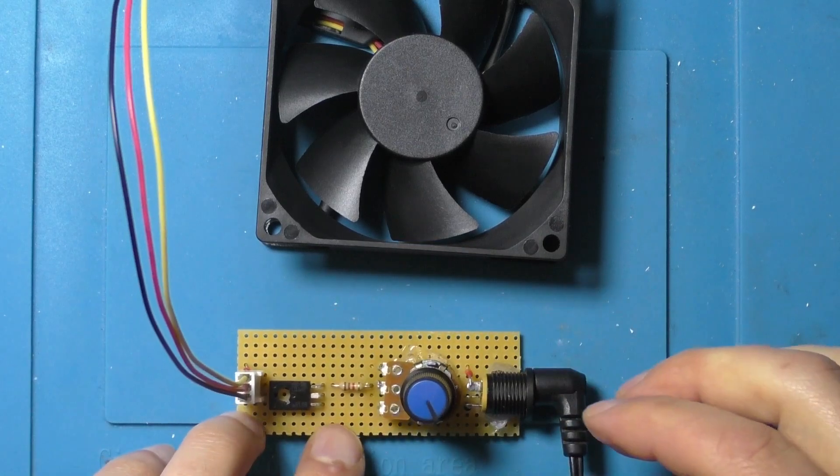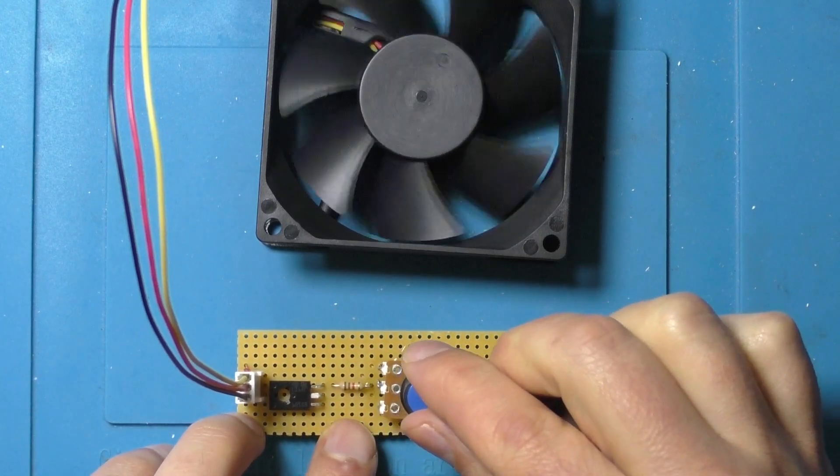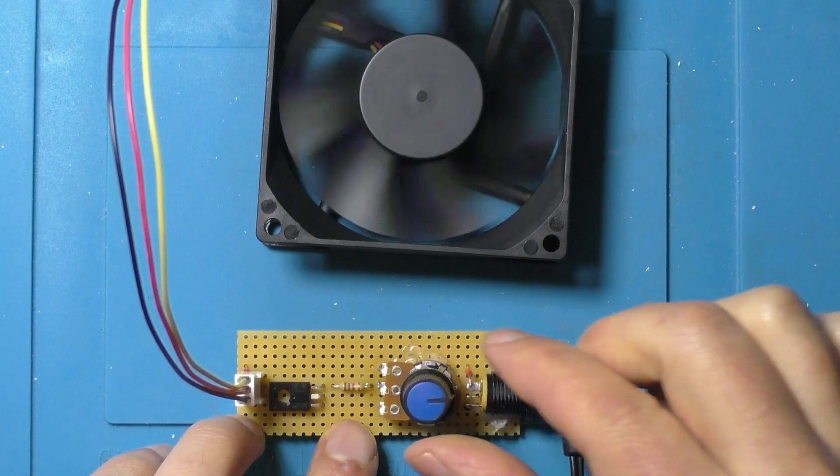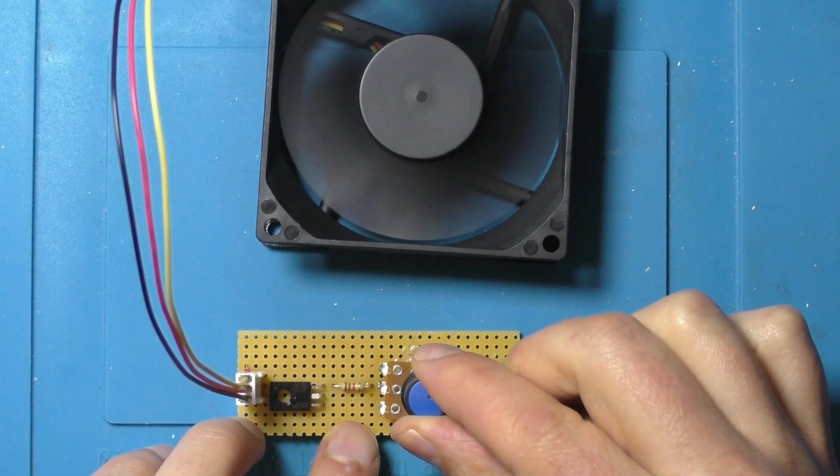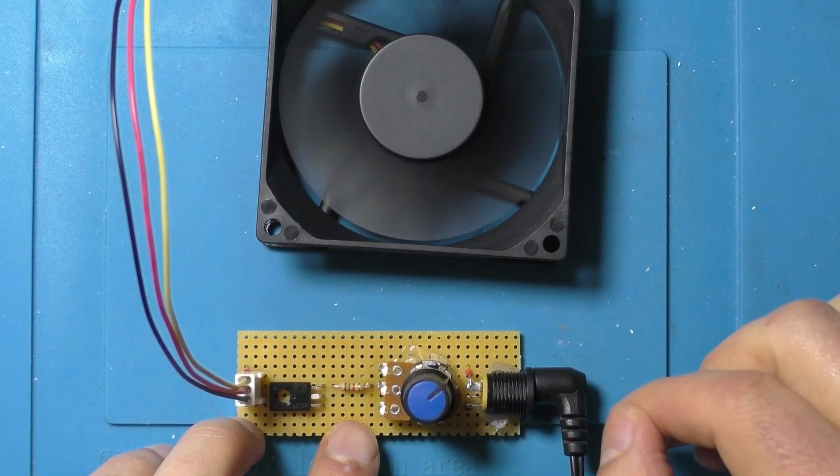Welcome to part 2 of hacking a computer fan. Today we're going to look at speed control and we're going to build a little controller that can do this. All of the parts you need are super cheap or free if you get them out of other electronic items.